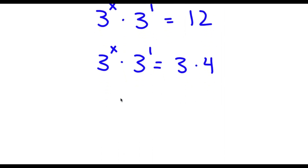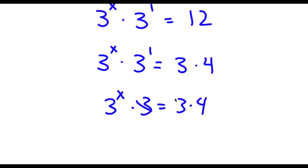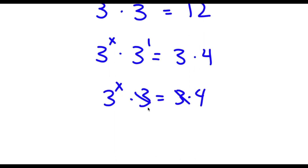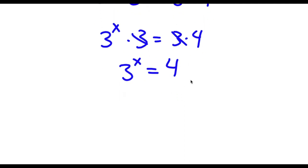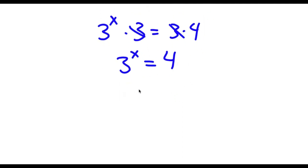Now, 3 to the power of 1 is 3, so these two 3s can simply cancel out. I'll be left with 3 to the power of x is equal to 4. Now this 4 is the same thing as 2 to the power of 2. So now I have 3 to the power of x is equal to 2 to the power of 2.